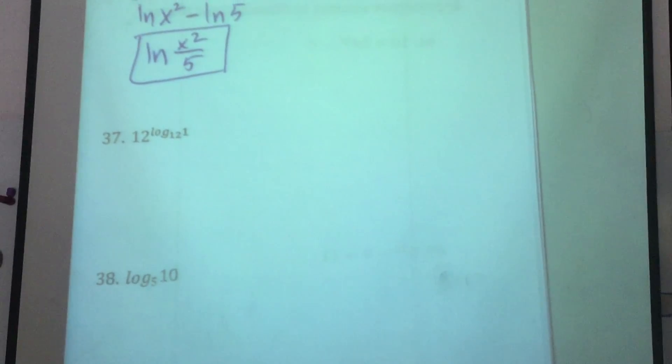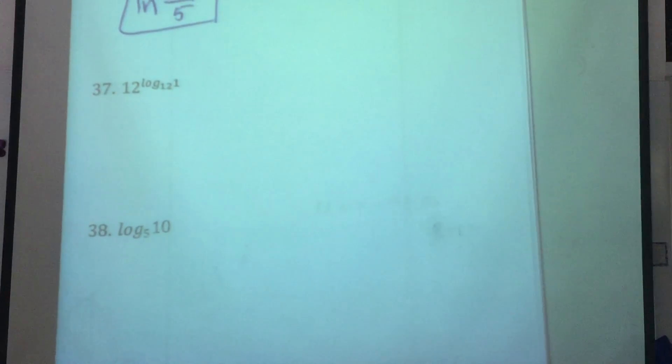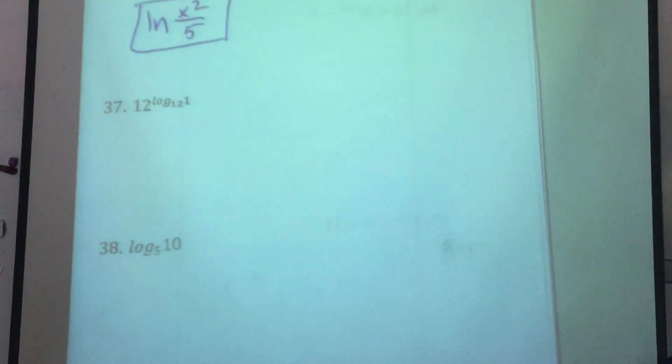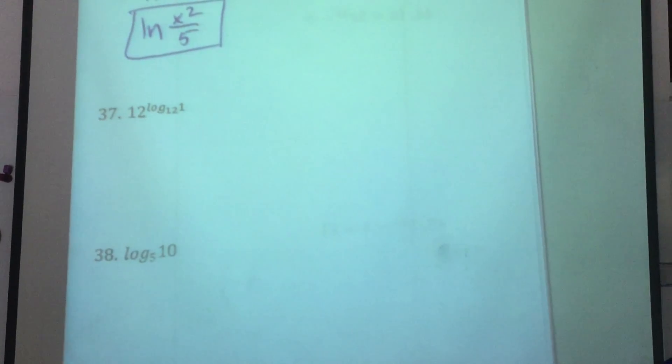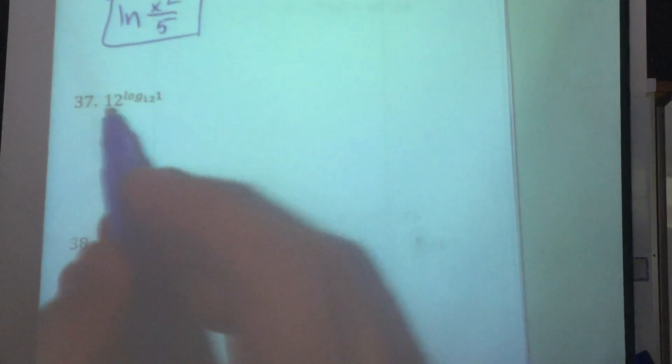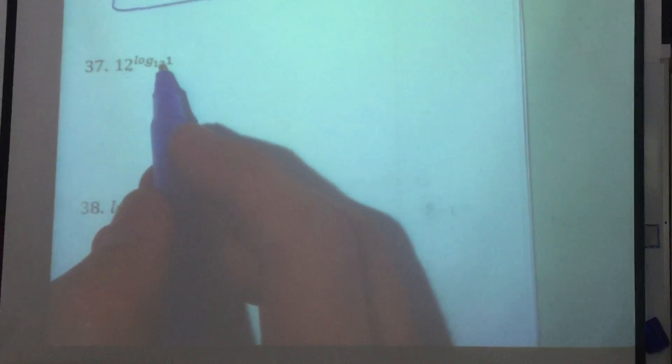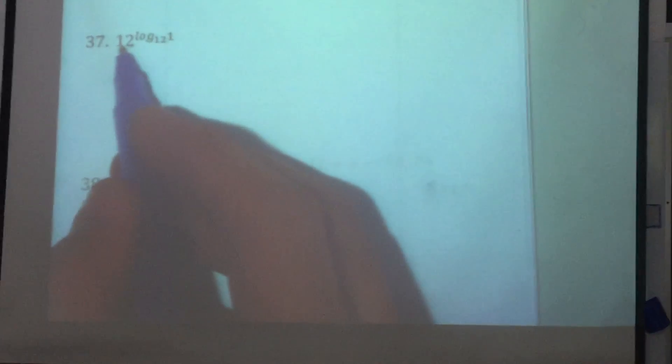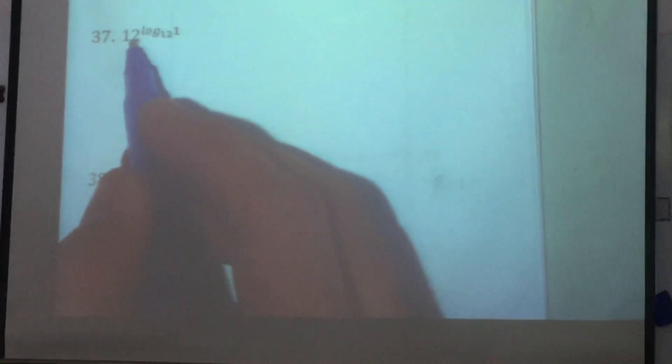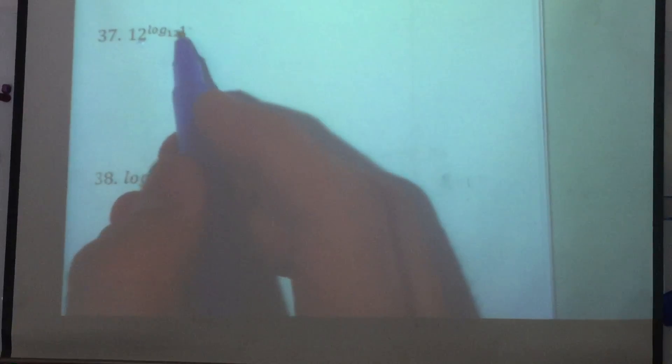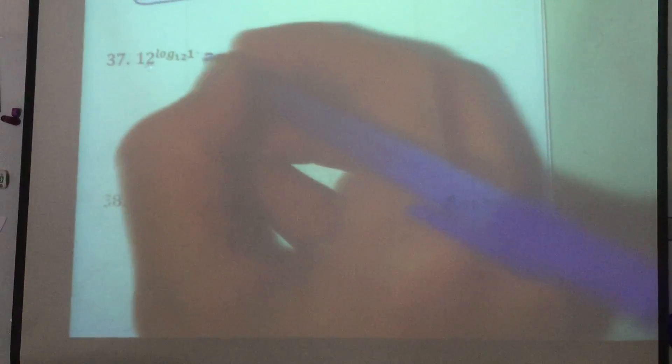37. 12 to the power of log base 12 of 1. There's a couple of ways you could go about this. See the exponent? It's a power with the base 12 to the logarithm with base 12. So the bases match, which pretty much undo each other, right? It's like taking the square root of a square. They cancel each other out. So the answer is just 1 based on that rule.